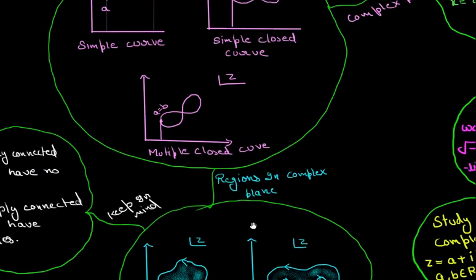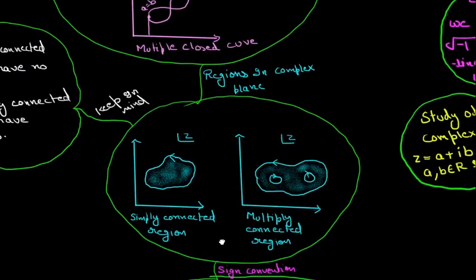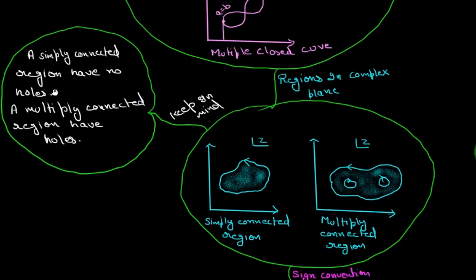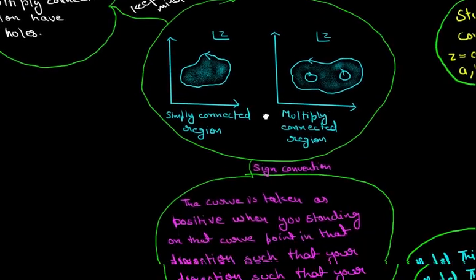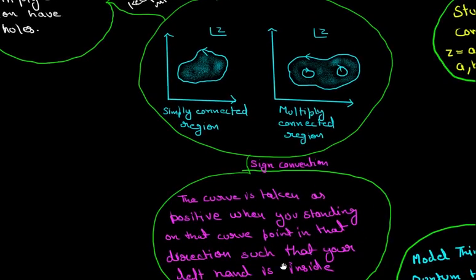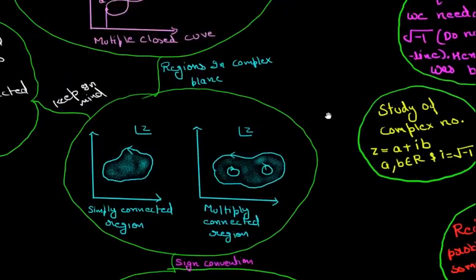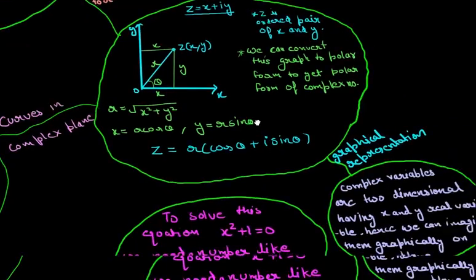From curves we go to regions in complex plane which are like simply connected region and multiply connected region. Keep in mind that a simply connected region has no holes but a multiply connected region has holes. The sign convention paragraph contains what is the sign convention when we have positive and negative things. Let's go back from these branches to the center.